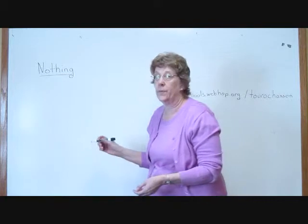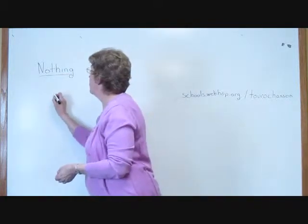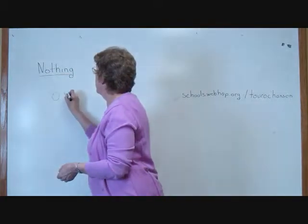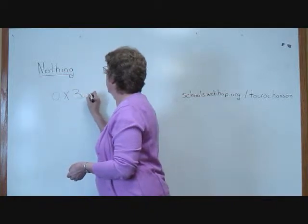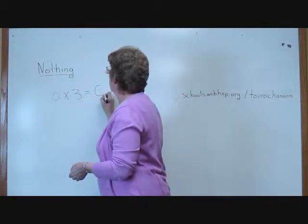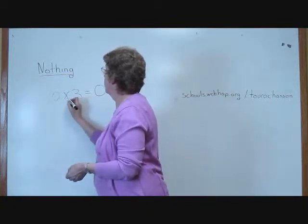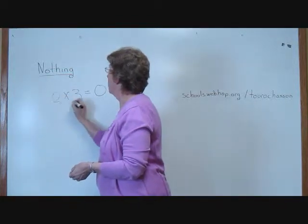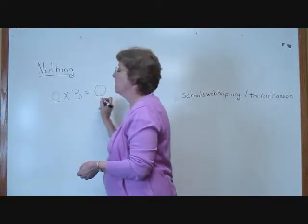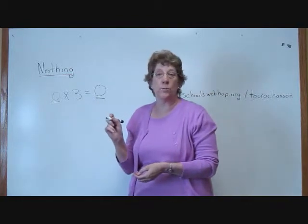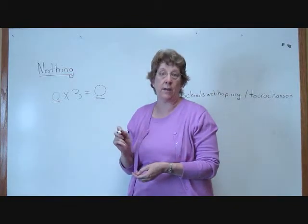Here are some examples. First, I'm going to take zero times three and it will equal zero. Anything times zero will equal zero. It doesn't matter how many times we multiply nothing, we will still have nothing.